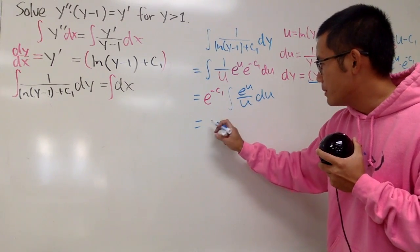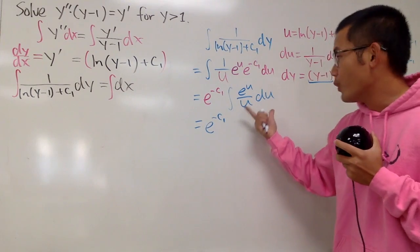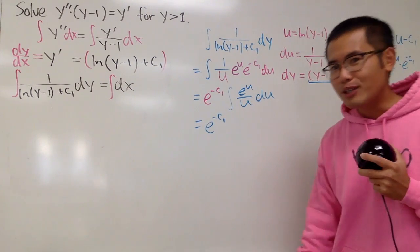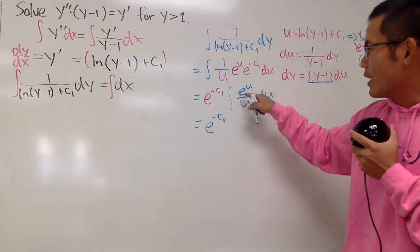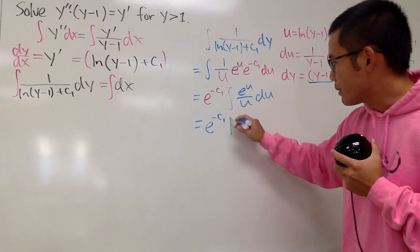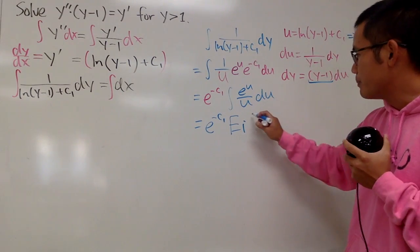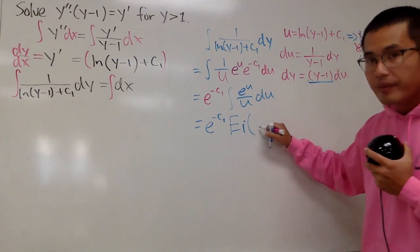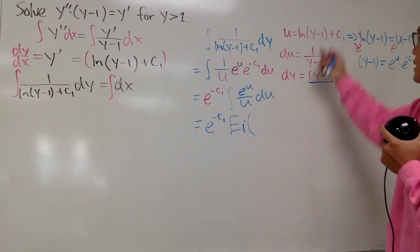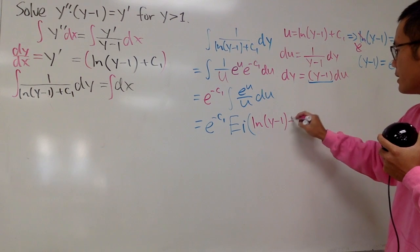So, I will still keep it as e to the negative c1, and what's this now? Well, this right here is such a special function. When we integrate e to the u over u in the u world, we get the exponential integral function, so Ei of the input, which is our u, and the u is this, so I will have to put down ln parentheses y minus 1 plus c1.